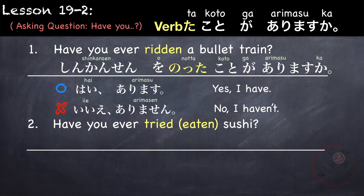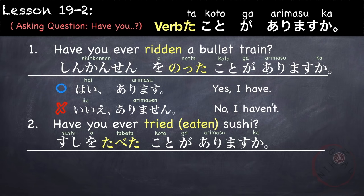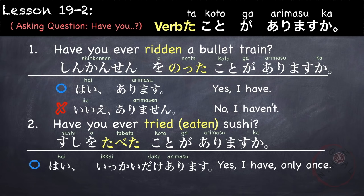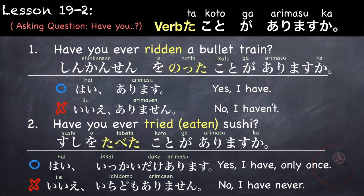Another example: have you ever tried or eaten sushi? Sushi o tabeta koto ga arimasu ka? Yes, I have, only once: hai, ikkai dake arimasu. Or, no, I have never, not even once: iie, ichido mo arimasen.